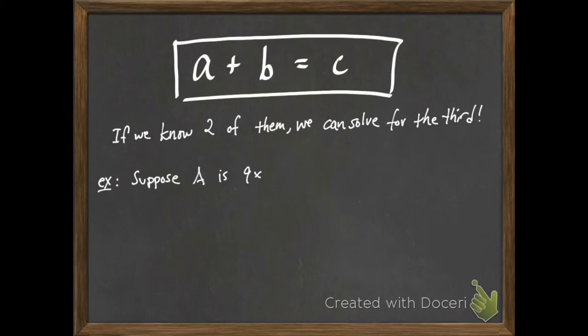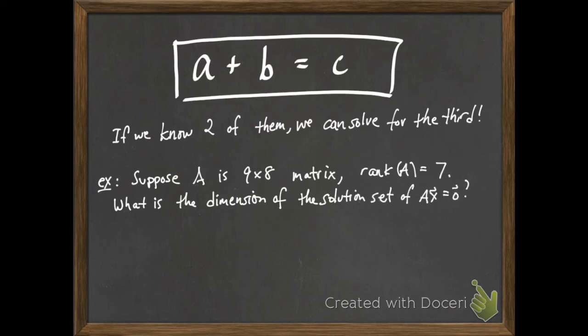So let's take a look at an example. Suppose A is a 9 by 8 matrix and you know that the rank of A is 7. What's the dimension of the solution set of Ax equals 0?